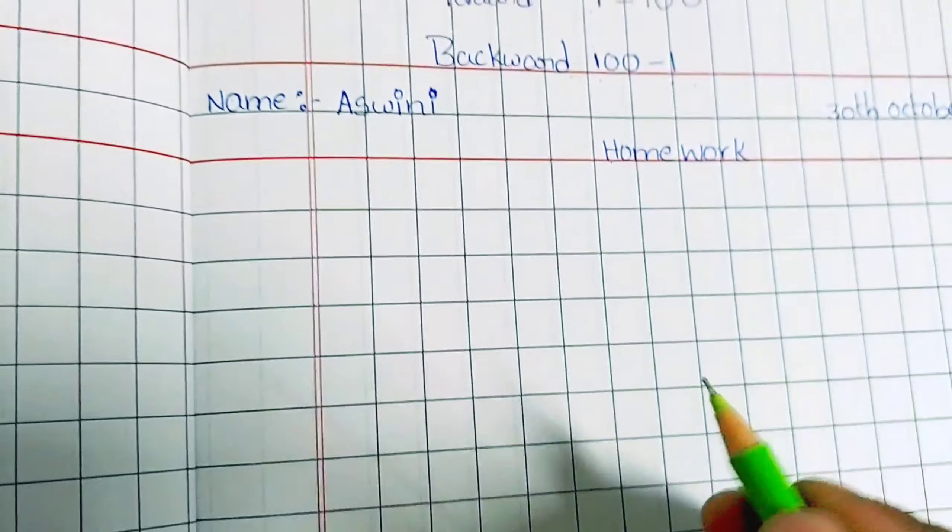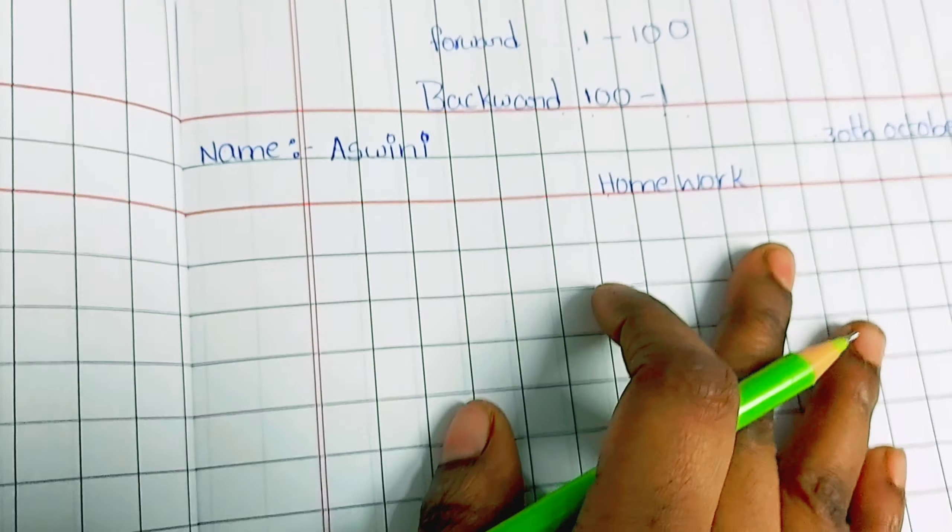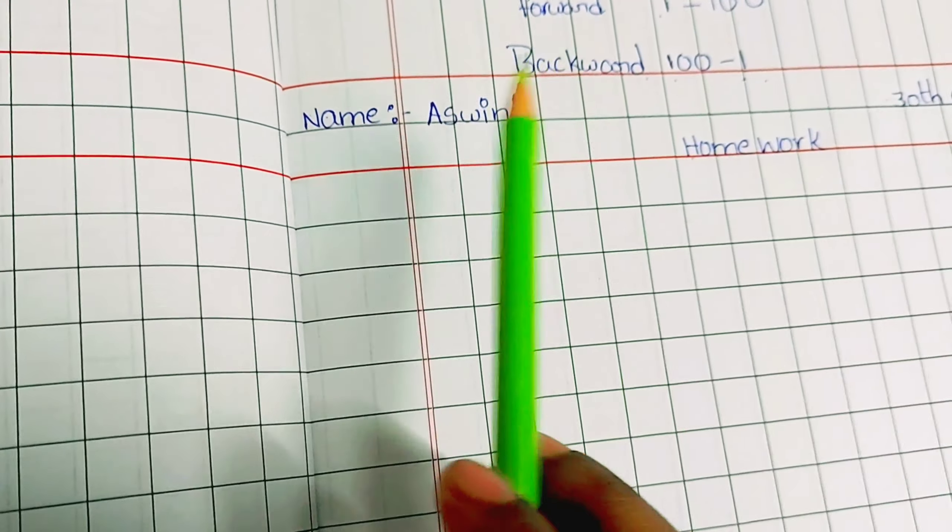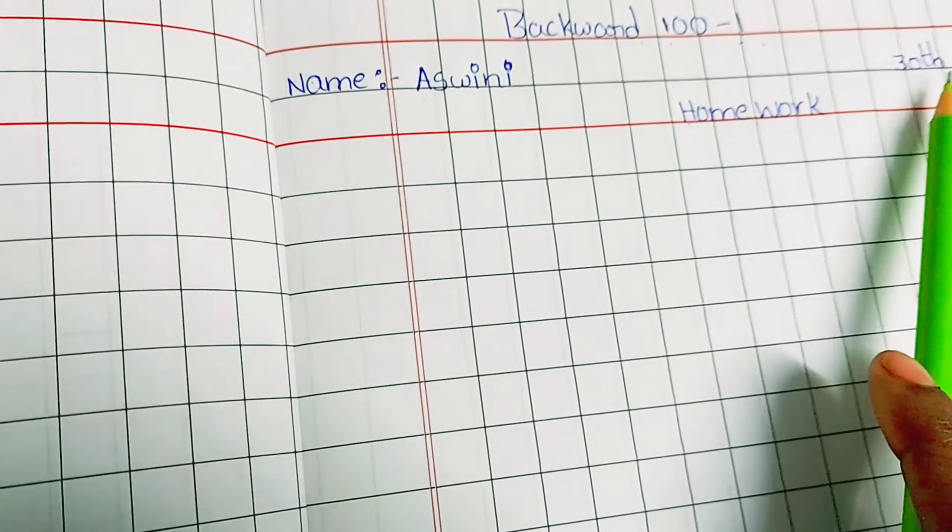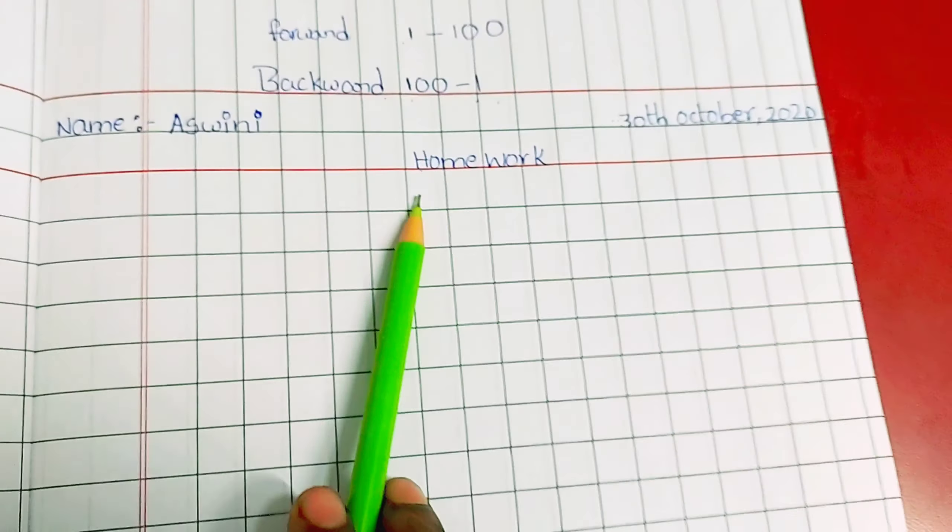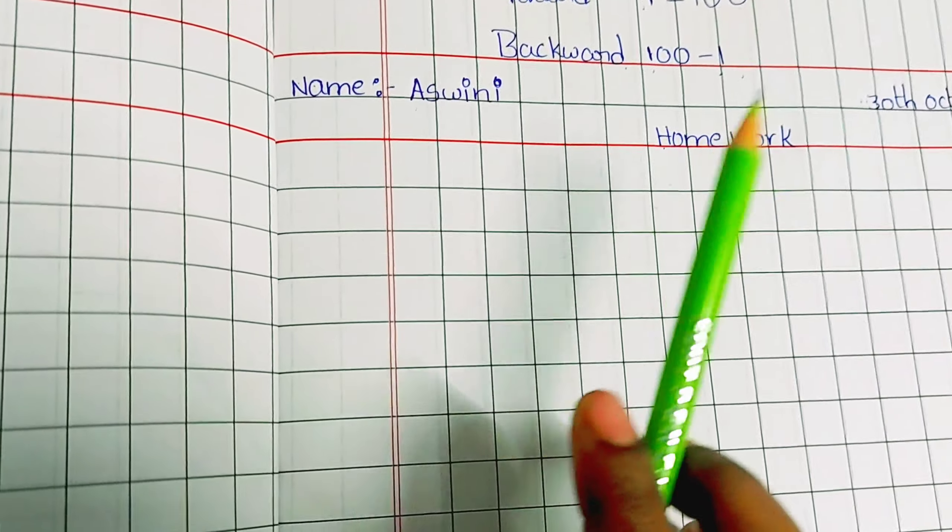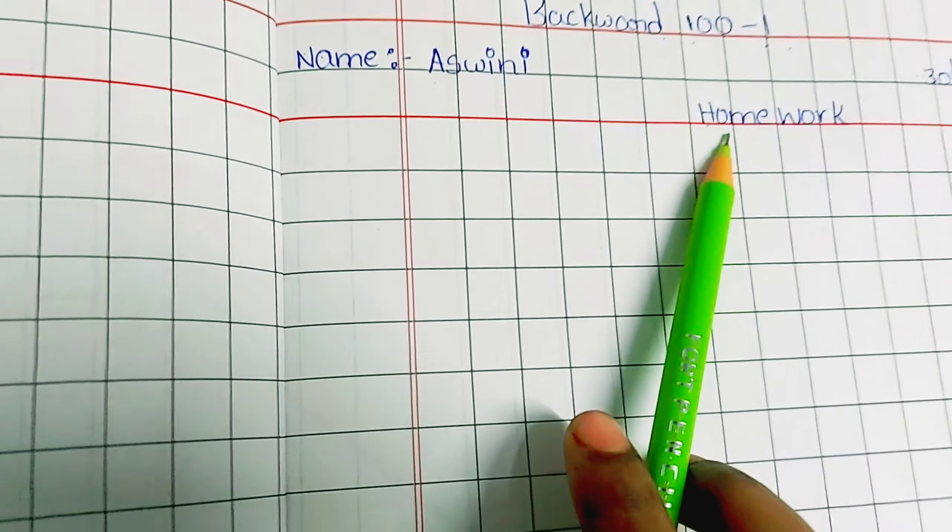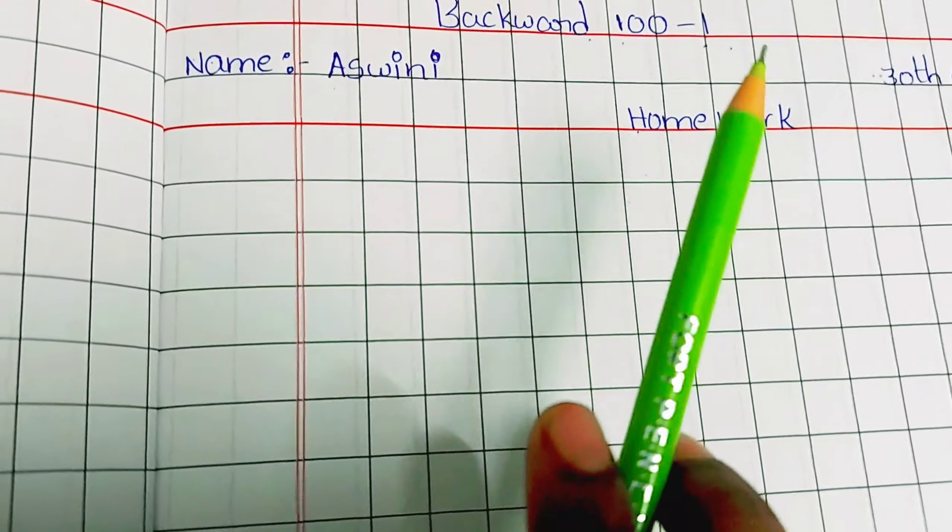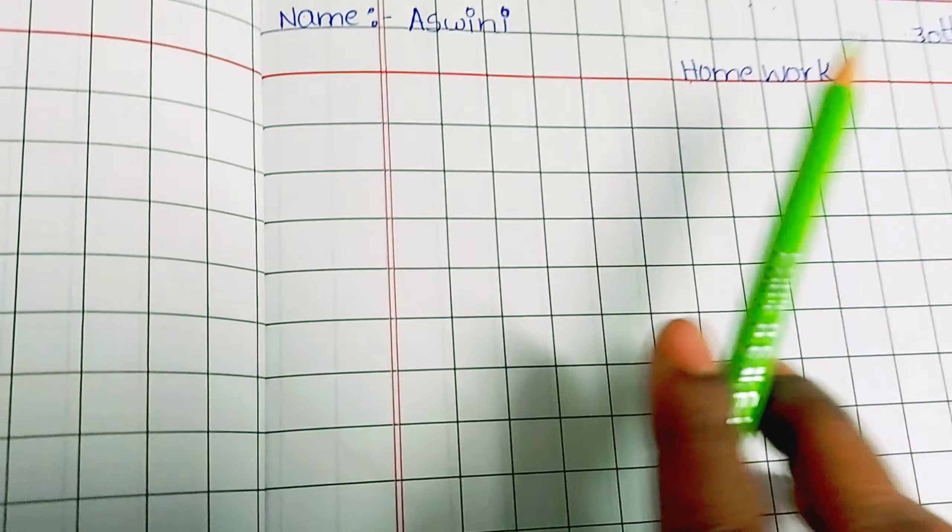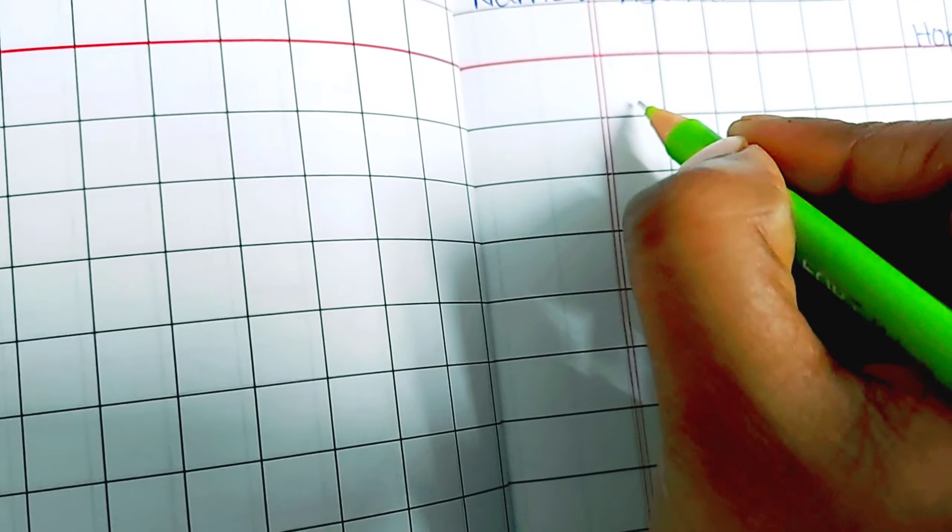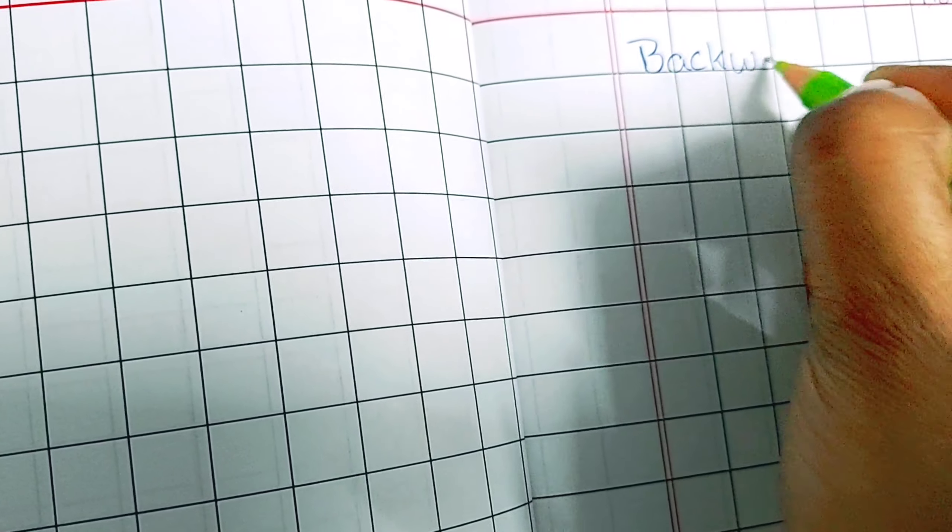And next, here children will write at home, then homework. So every time child should know to write their name, date, and where he writes, at home or class, school. So classwork, there he writes in class. At home he writes homework. Next, today topic is backward counting. So let's start.